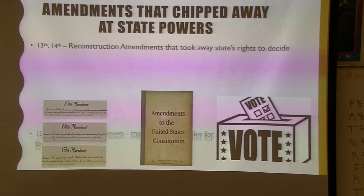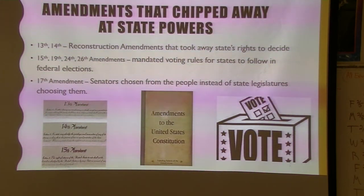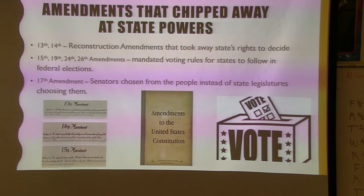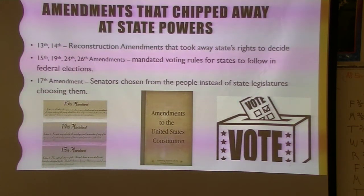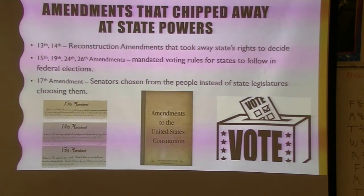Traditionally, the federal government has taken power away from the states. How? The 13th and 14th Amendments. The 13th Amendment banned slavery — a state used to be able to decide on that under states' rights; no longer. The 14th Amendment required certain things of states to rejoin the Union, and it protects civil rights through the Due Process Clause. The voting amendments took voting — which was supposed to be a state power — and required states to uphold certain standards for federal elections.